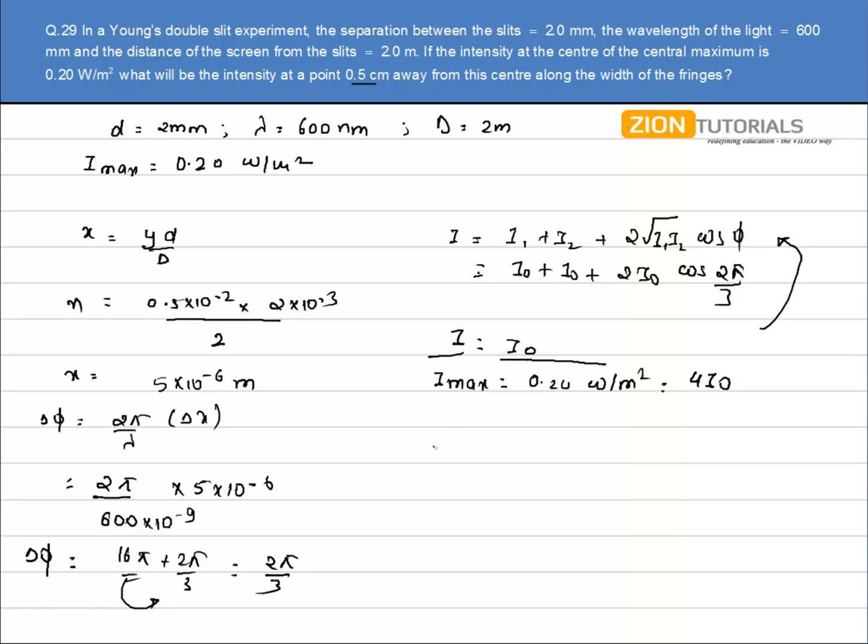So take the ratio of both of them. It comes out to be I by I_max is equal to I_0 by 4 I_0. So I_0 gets cancelled. I_max value is 0.20 equals to 1 by 4. So the value of I comes out to be 0.05 watt per meter square. That is the answer.